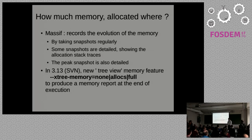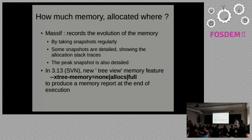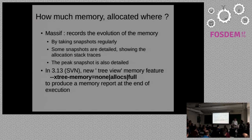In the new release of Valgrind — currently in SVN, not yet in the released version — a new xtree memory feature has been added. There is a new command line option: --xtree-memory, where you can choose between none, allocs, or full. Selecting something other than none will produce a memory report at the end of the execution of your program.